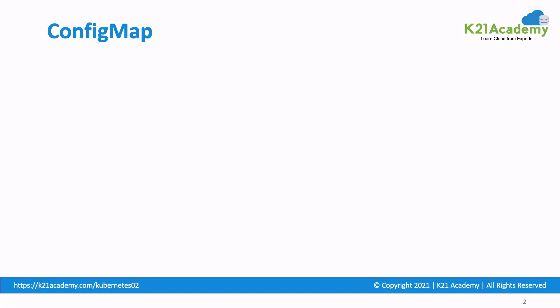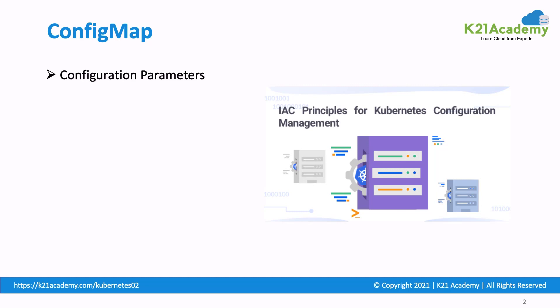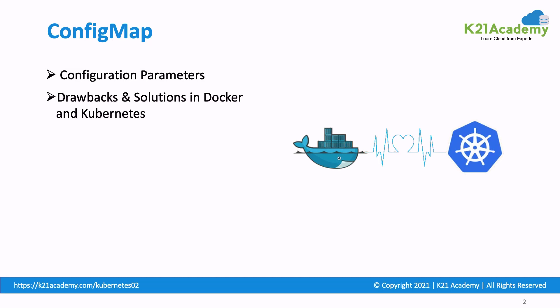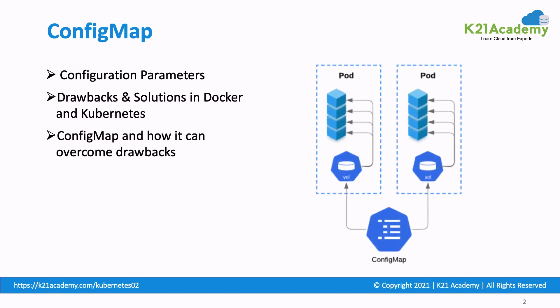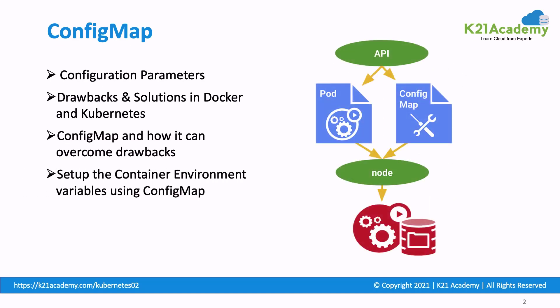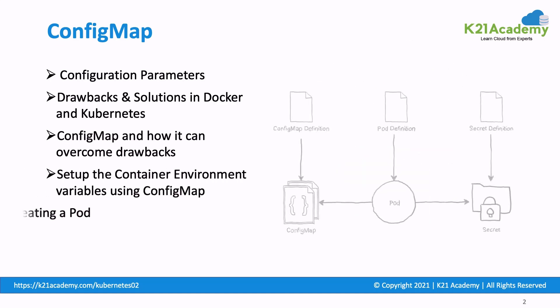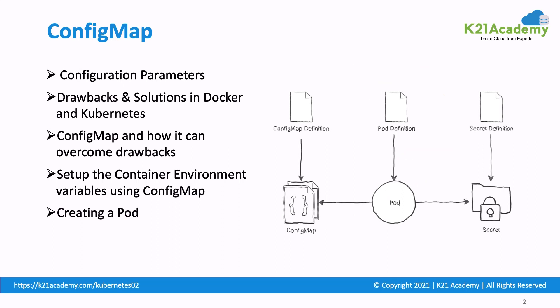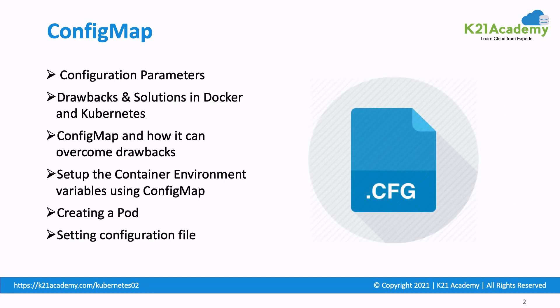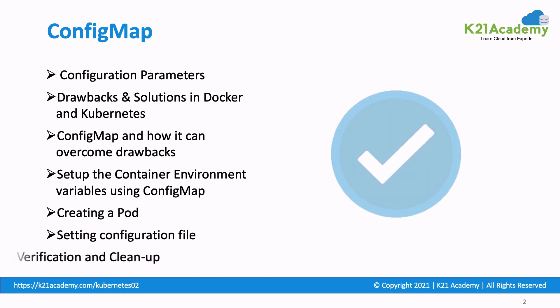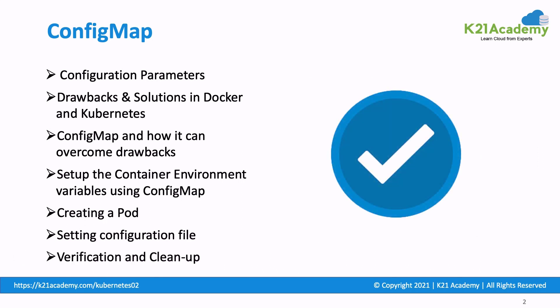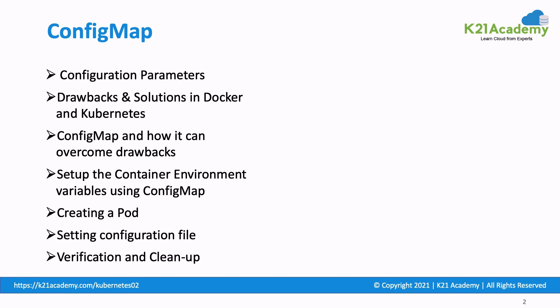In this video, we will cover what are configuration parameters and how we can pass configuration parameters to the container. Drawbacks and solutions in Docker and Kubernetes. What is config map and how it can overcome drawbacks. How to set up container environment variables using config map, creating a pod that uses config map and verifying if the pod uses a config map to set up the environment variables. Setting configuration file with volume using config map, verifying mounting of config map as volume, and how to clean up and delete all the resources created in the task.